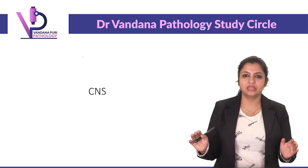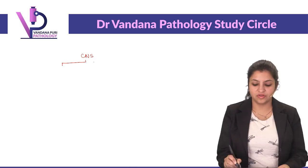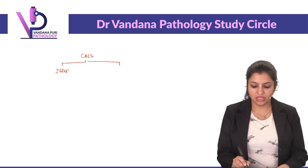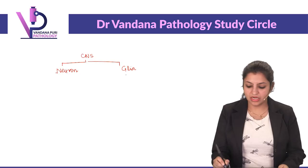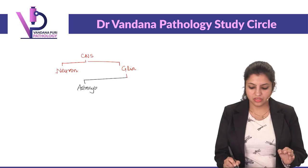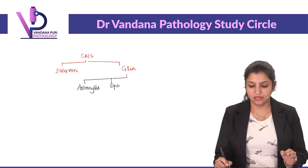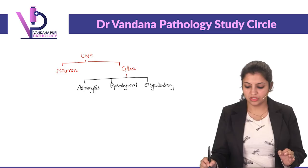To understand CNS tumors, everyone should first be clear about the basic cells of the CNS. CNS has basically two types of cells: neuronal cells, and glia cells. Glia is further of four types: first, astrocytes; second, ependymal cells; third, oligodendrocytes; and fourth, microglia cells.